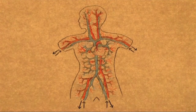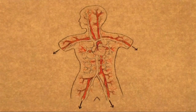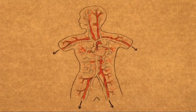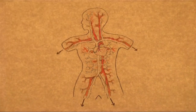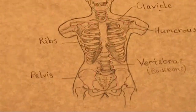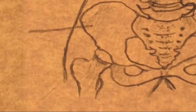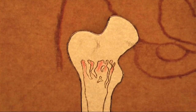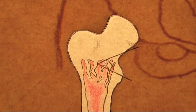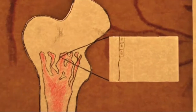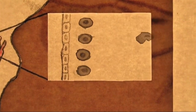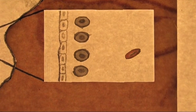Stammzellen kommen im Blutsystem zum Einsatz. Wir brauchen jeden Tag Millionen neuer Blutzellen, und diese werden von Stammzellen erzeugt. Diese Stammzellen leben im Knochenmark. Insgesamt kann eine Blutstammzelle acht verschiedene spezialisierte Zelltypen produzieren.